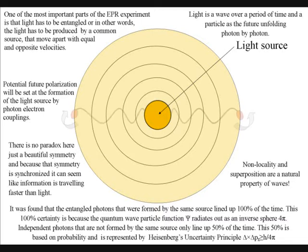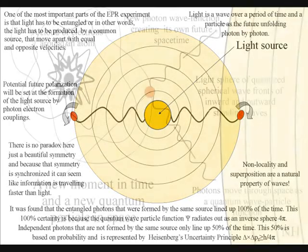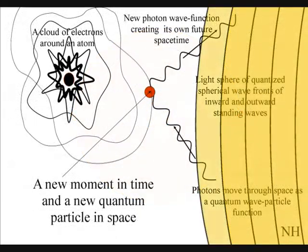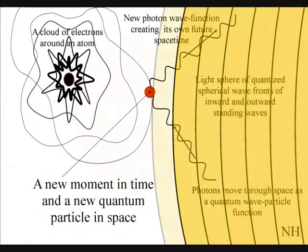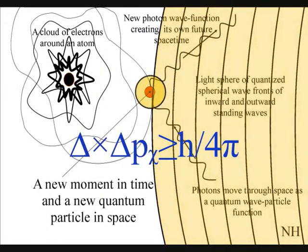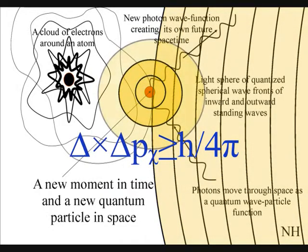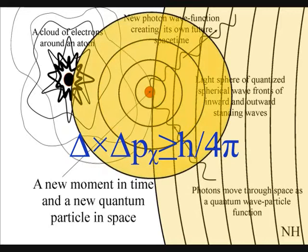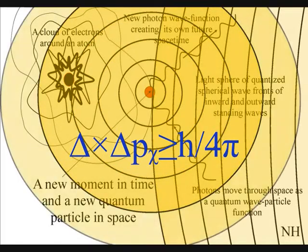It was found that entangled photons that were formed by the same source line up 100% of the time, and independent photons that were not formed by the same source only line up 50% of the time. This 50% is based on probability.